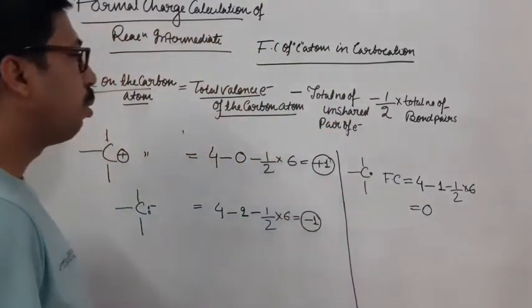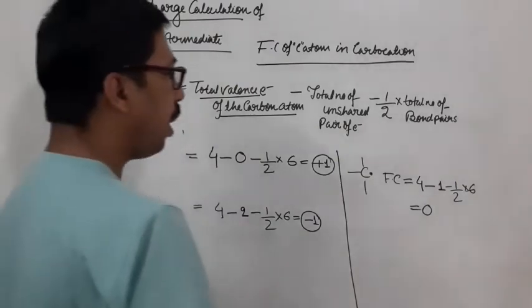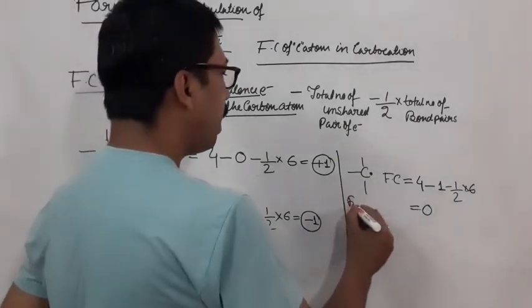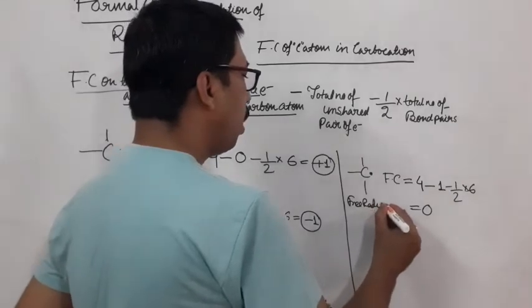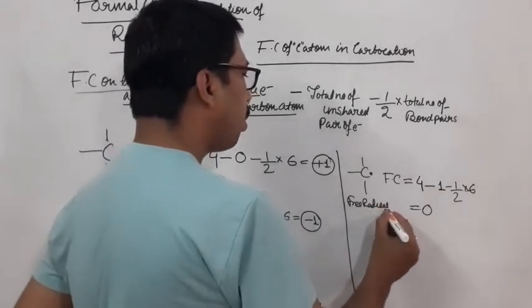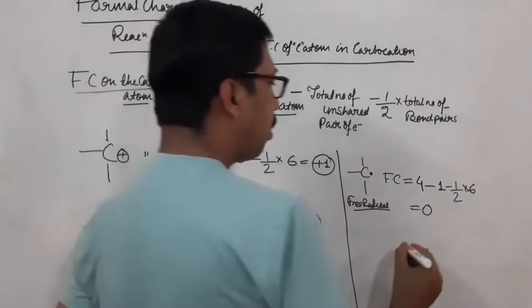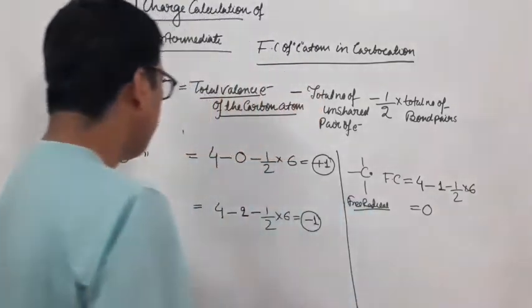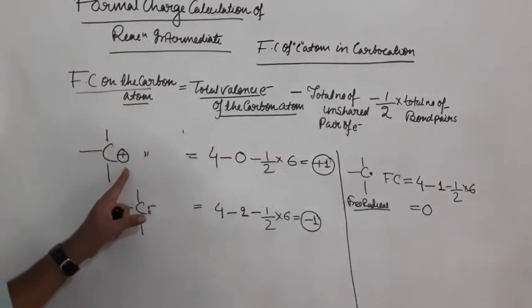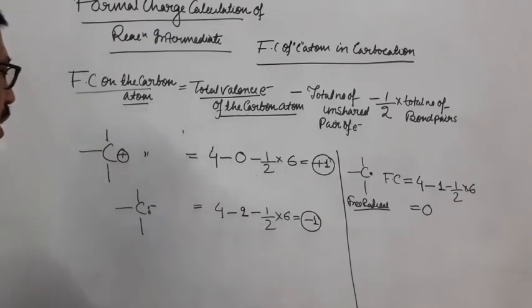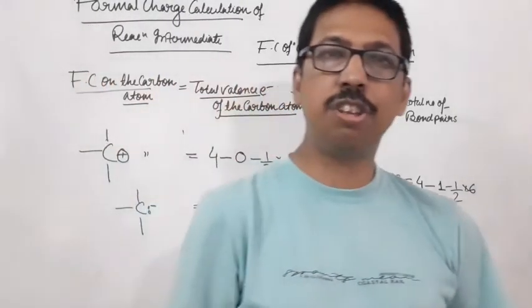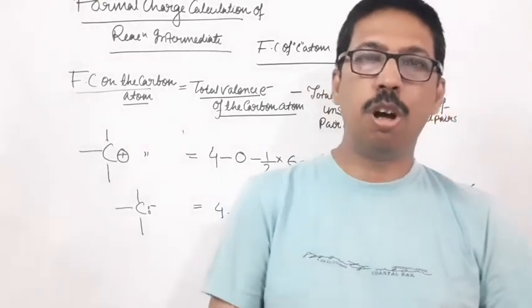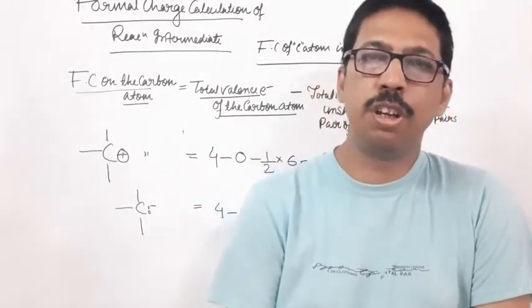So this is free radical. Free radical, charge does not exist. One unit positive charge exists for carbocation, one unit negative charge exists for carbanion, and free radical does not have any charge.